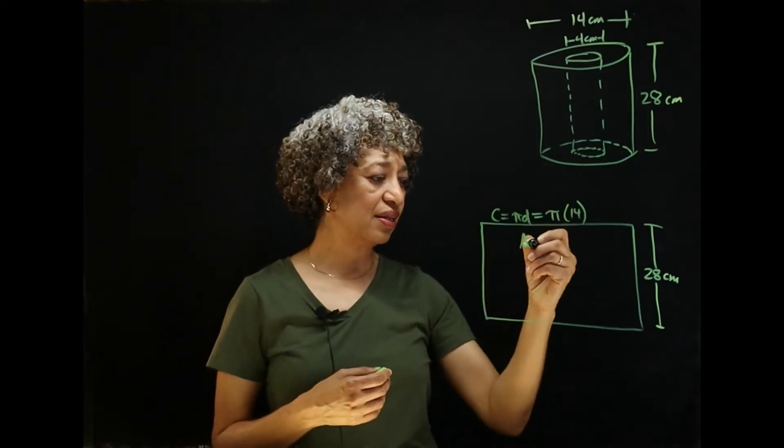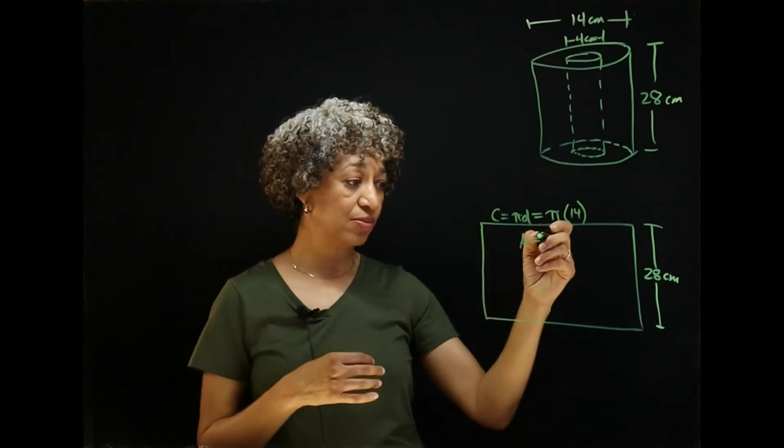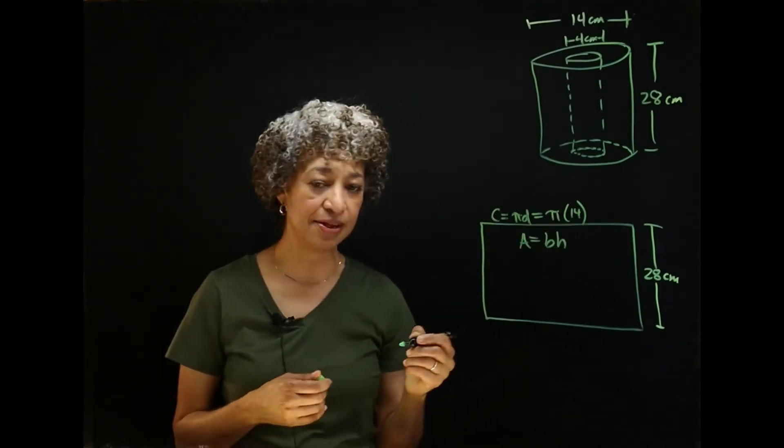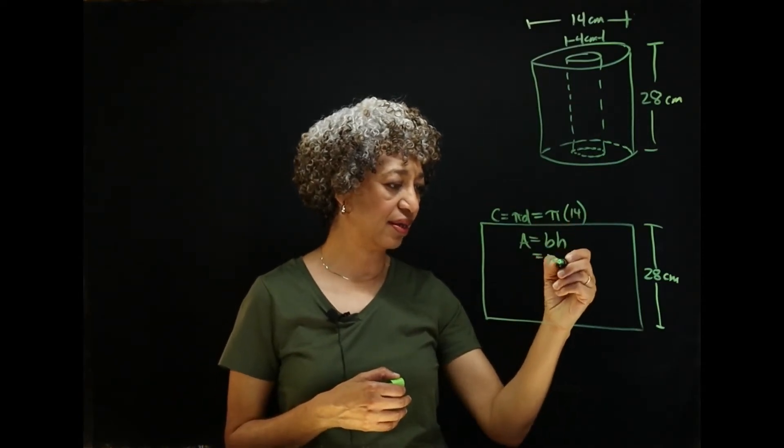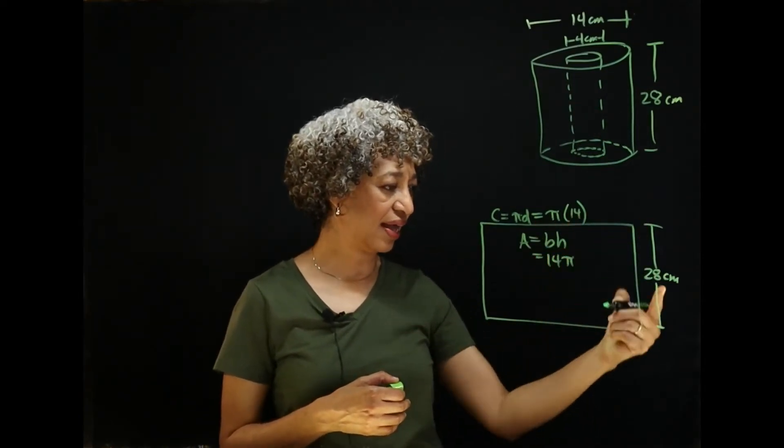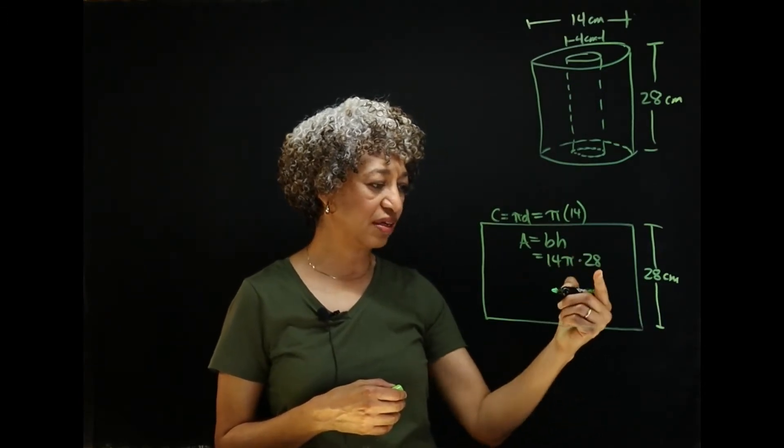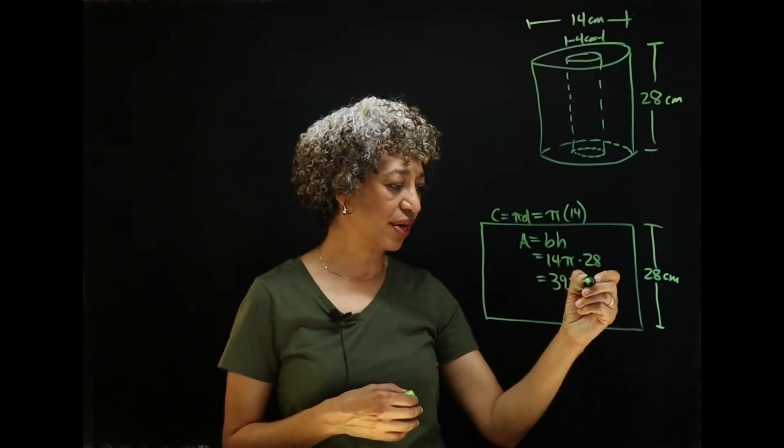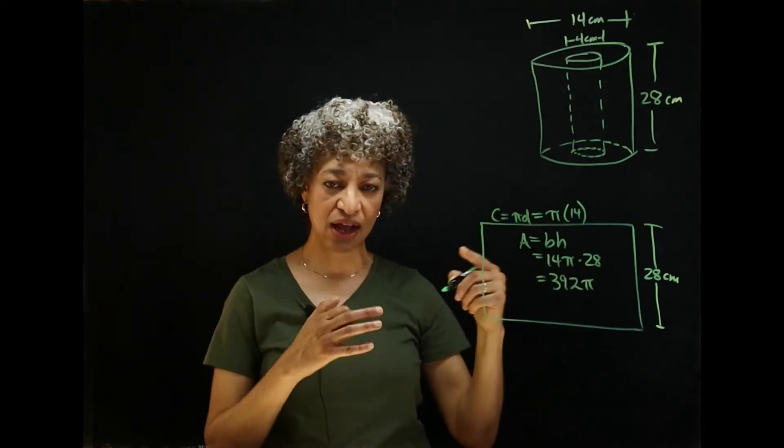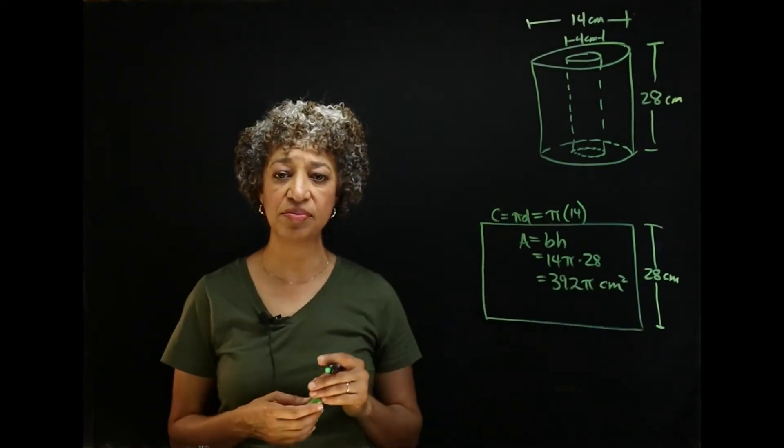Now, again, the area of a rectangle is length times width. Or perhaps base times height is the way you might say it. And our base is 14 pi. And our height is 28. 14 times 28 is 392. So, our area for this outer shell is 392 pi square centimeters.